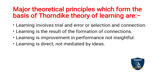The major theoretical principles forming the basis of Thorndike's theory are: learning involves trial and error of stimulus and response — that is, selection or connection. Learning is the result of the formation of connections or bonds. Learning is improvement in performance, not insightful. And learning is direct, not mediated by ideas.